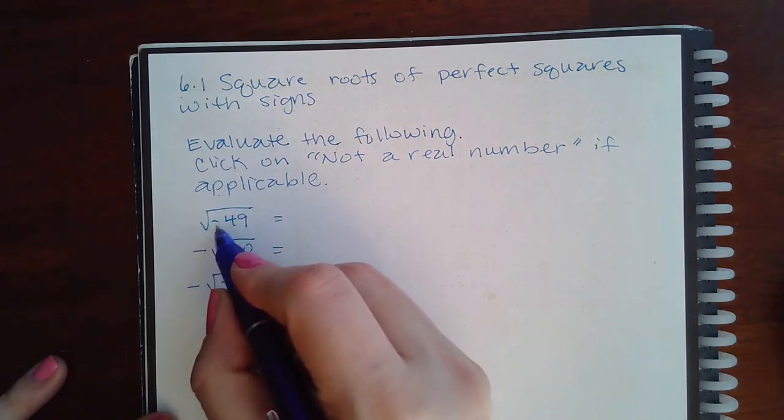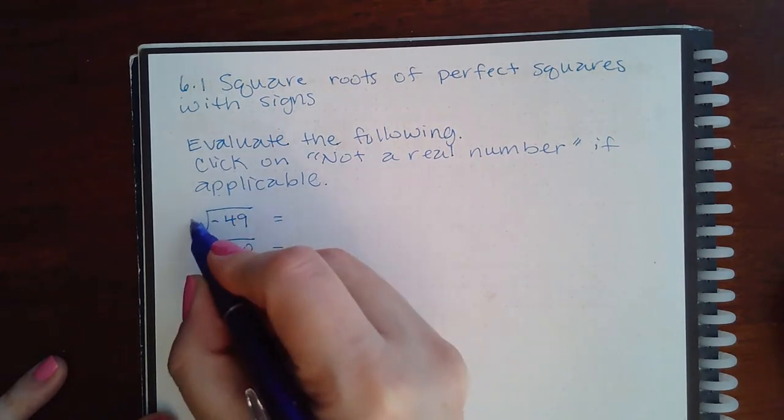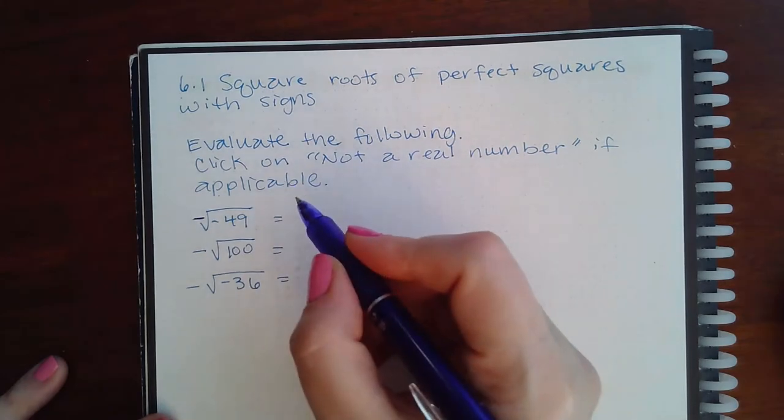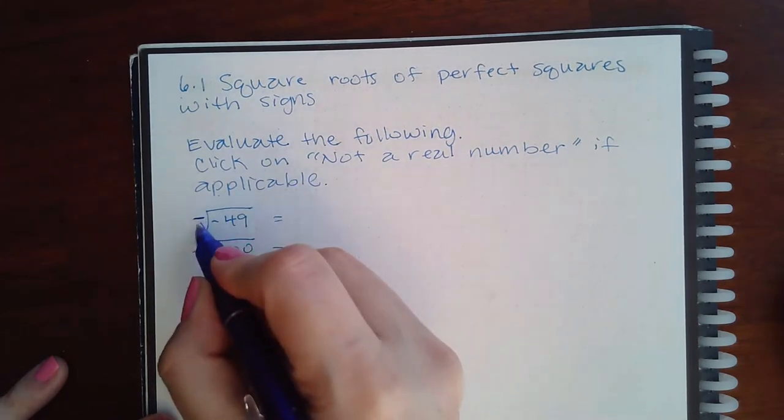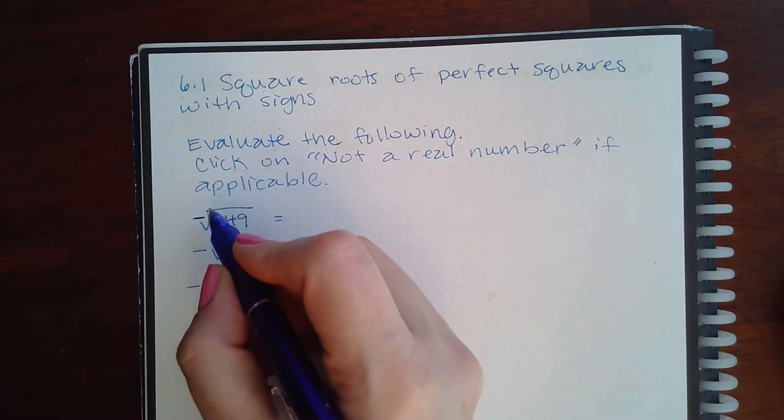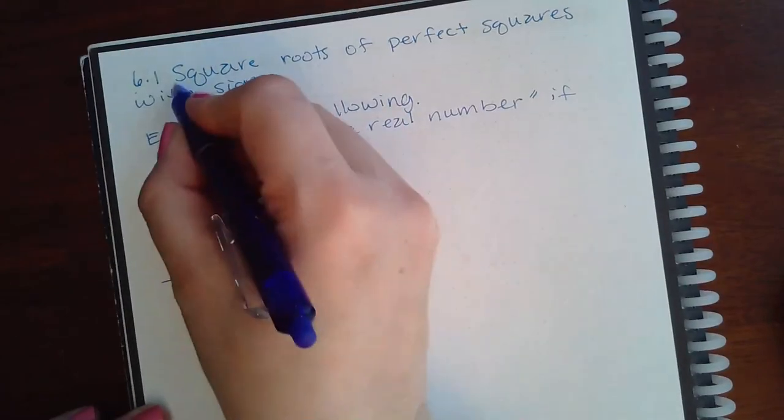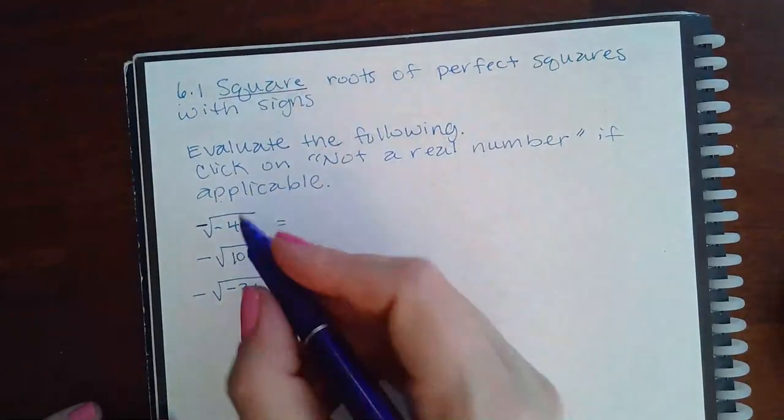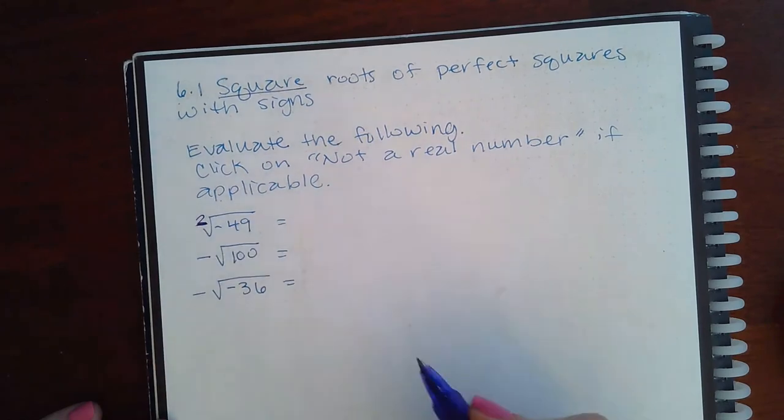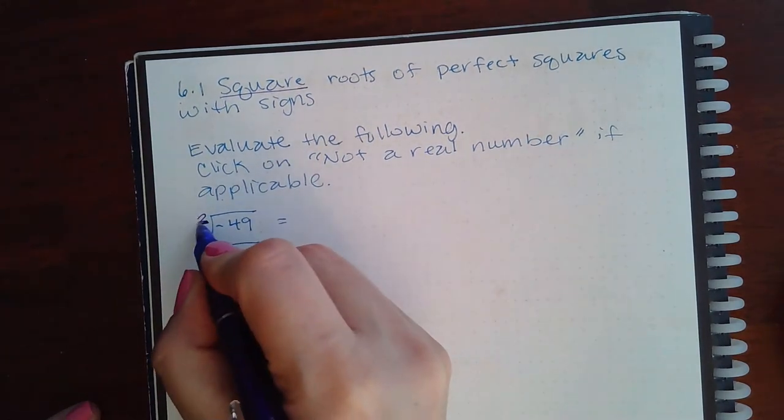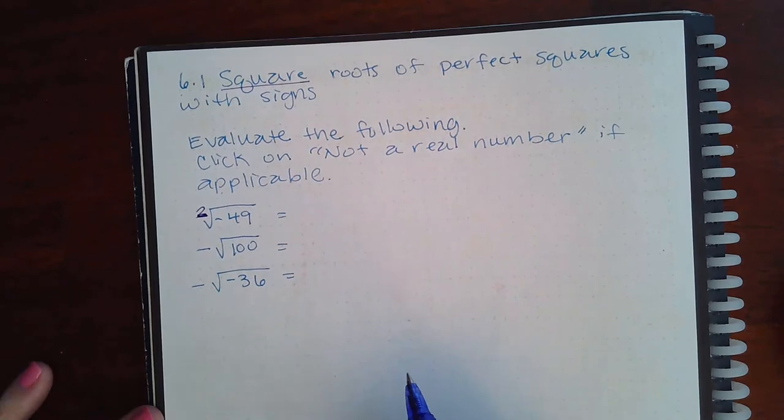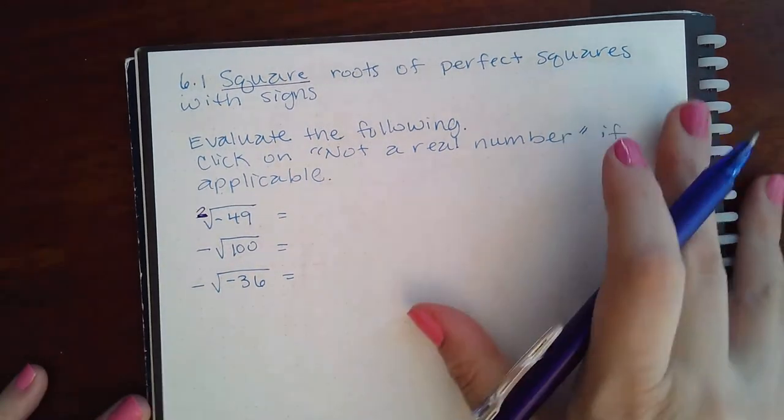Okay, any even root, if this index here is even, then you cannot take the square root. And the index for a square root, the index of square roots is a two, which is an even number. So my index is in fact even on a square root and you cannot have a negative radicand inside an even root.